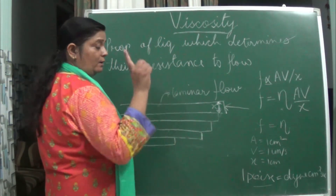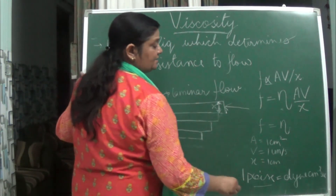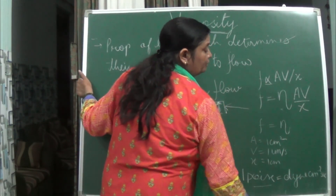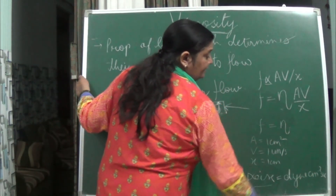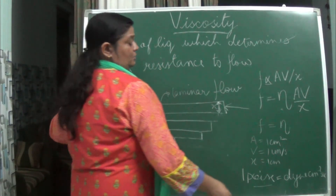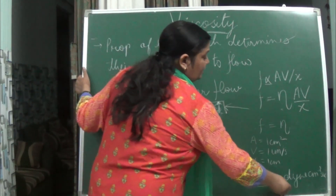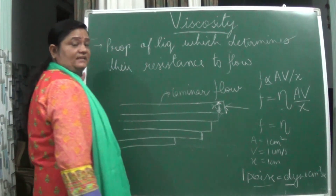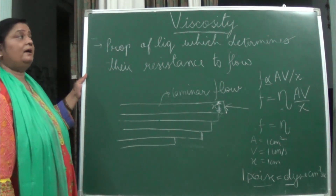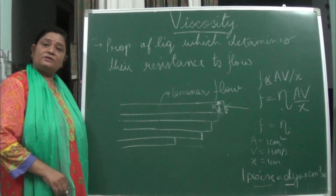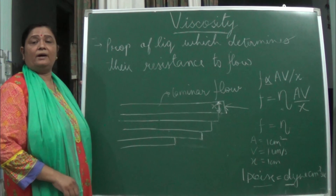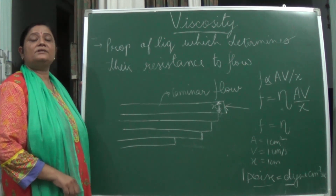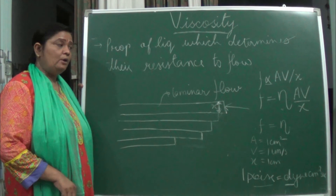This condition is known as 1 poise, and 1 poise represents dyne·cm⁻² per second — this is the unit of viscosity. With this viscosity, we come to the end of the chapter on states of matter.